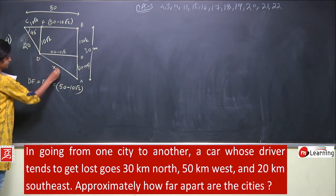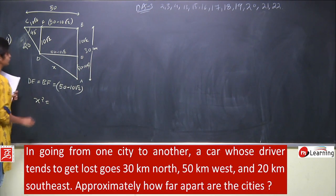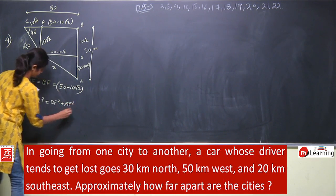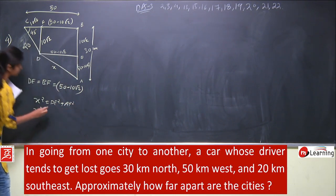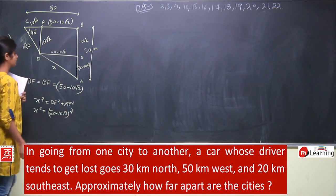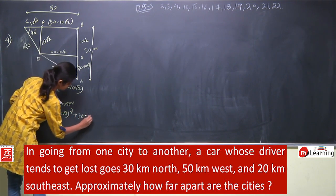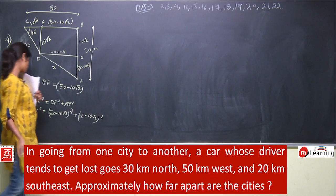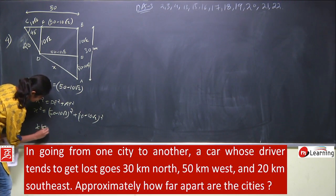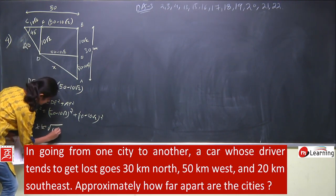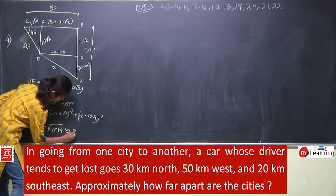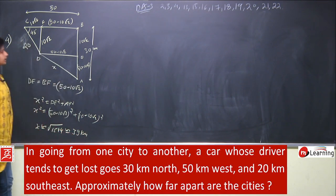Let x = AD. Then x² = DE² + AE² = (50 − 10√2)² + (30 − 10√2)². Solving this gives x = √1554, which is approximately 39 km. So the answer is approximately 39 km.